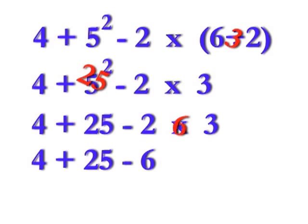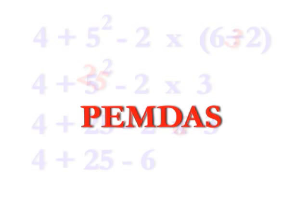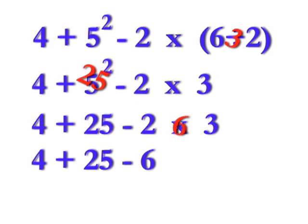Now, all you have left is addition and subtraction. Even though PEMDAS doesn't show it, you should know that addition and subtraction are also performed in order from left to right. In this case, the addition is to the left, so do it first. And you get 4 plus 25, which is 29. Rewrite the sentence again. This time as 29 minus 6. Finally, you do the subtraction because it was to the right of the addition. And 29 minus 6 is 23.